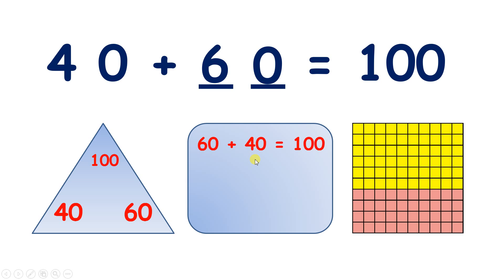And we also know two subtraction facts, because remember, when you subtract one of the numbers in our triangle from the top number, you get the other number. So 100 minus 60 is 40, so if we subtract those 60 yellow squares, we'll be left with 40 pink squares.